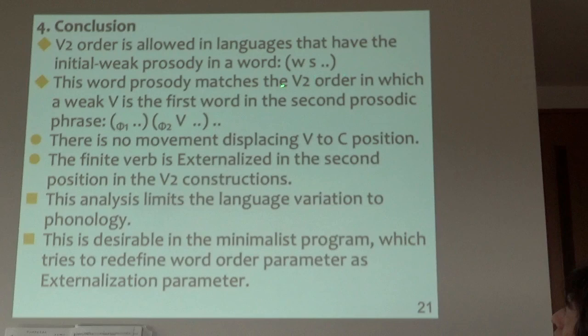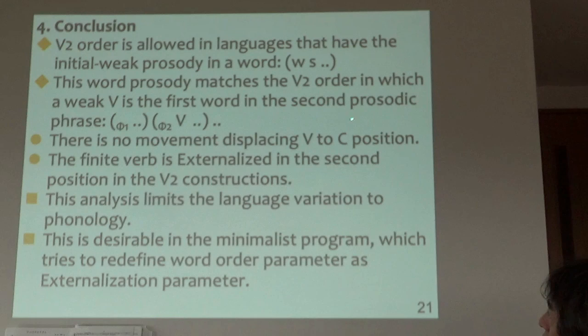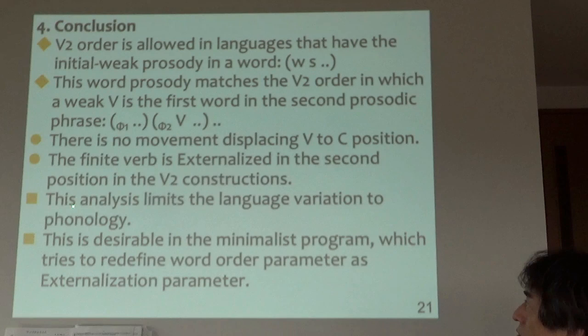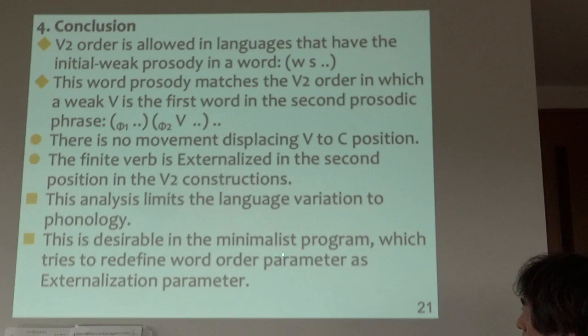Here are the conclusions. V2 order is allowed in languages that have initial weak prosody in the word — a weak-strong pattern. This word prosody matches the V2 order in which a weak V is the first word in the second prosodic phrase: weak-strong. There is no movement placing V in the C position. The finite verb is externalized in the second position in V2 constructions. This analysis limits language variation to phonology, which is desirable in the minimalist program, which tries to redefine word order parameters as externalization parameters. Thank you very much — I welcome your comments and suggestions.